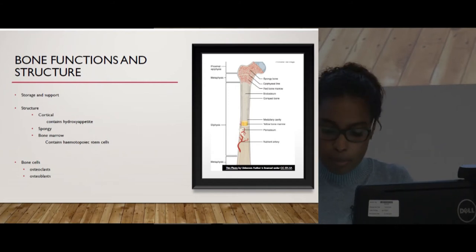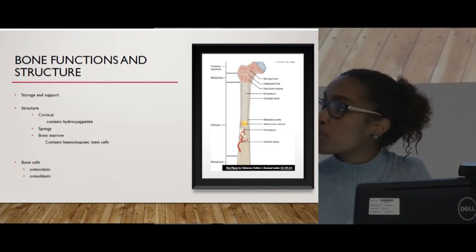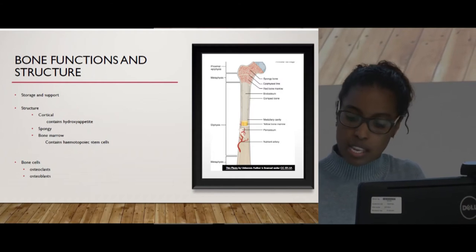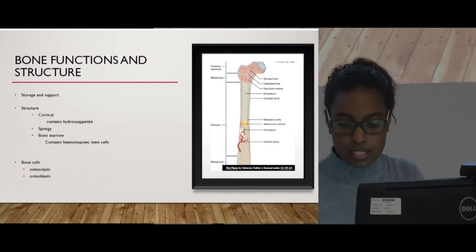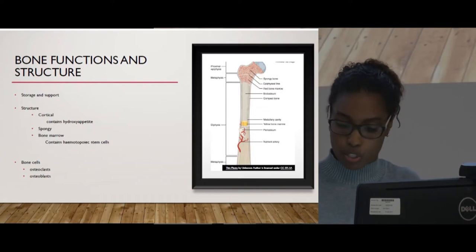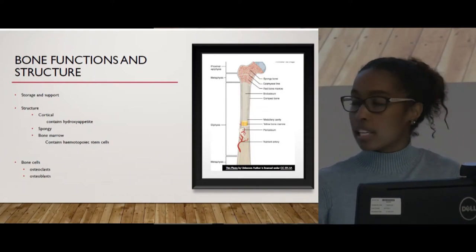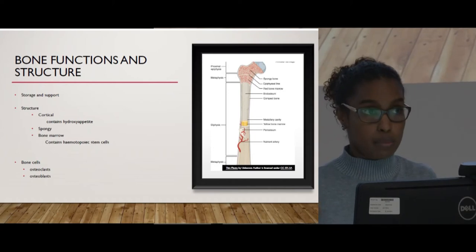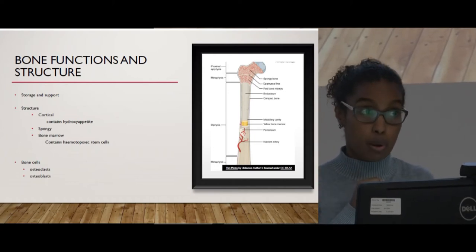We have the bone matrix, which is composed of both collagenous and non-collagenous proteins. The main mineral is hydroxyapatite, which contributes to the hardness and rigidity of the bone. The crystalline complex is actually 70% of calcified bone, so it's very important.